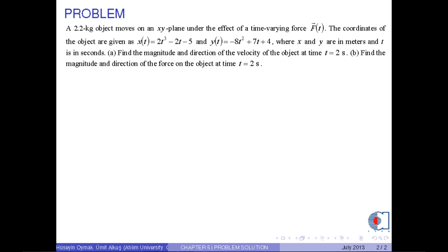A 2.2 kg object moves on an xy-plane under the effect of a time varying force F(t). The coordinates of the object are given as x(t) = 2t³ - 2t - 5 and y(t) = -8t² + 7t + 4, where x and y are in meters and t is in seconds.